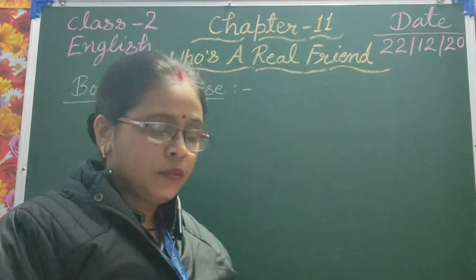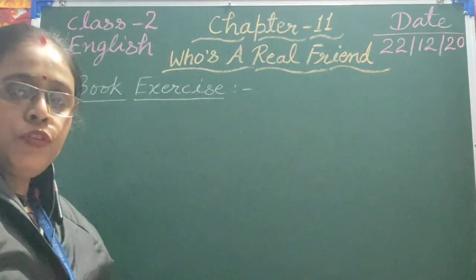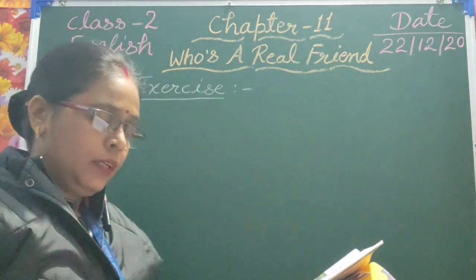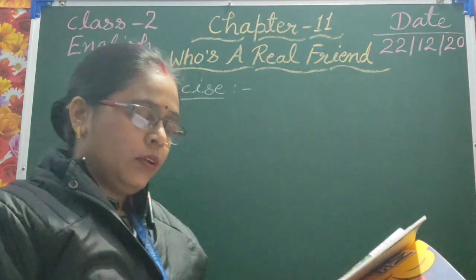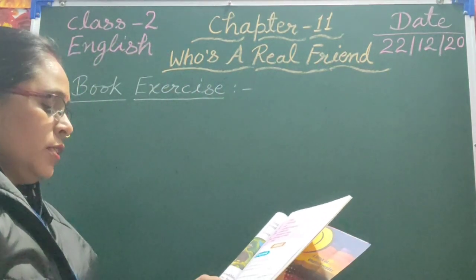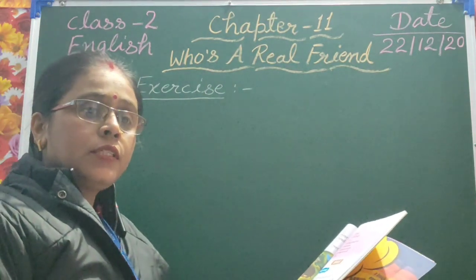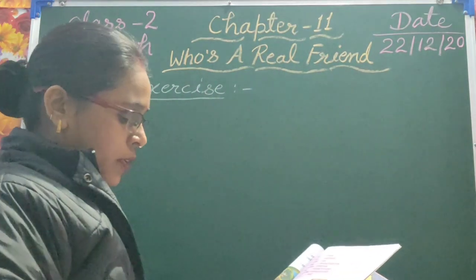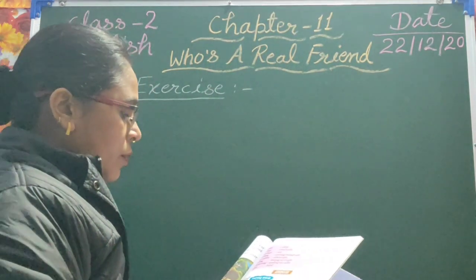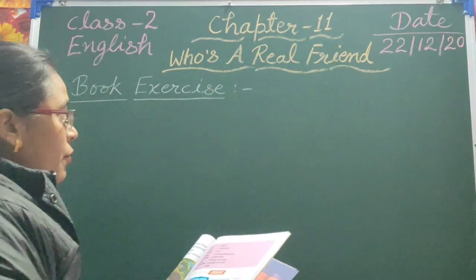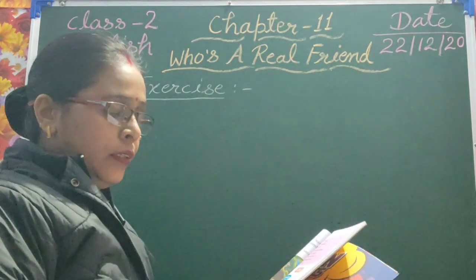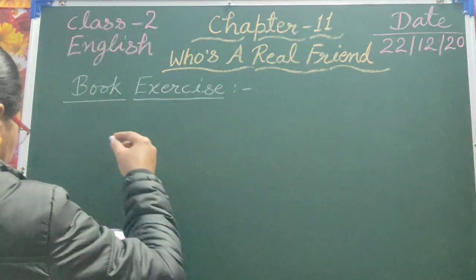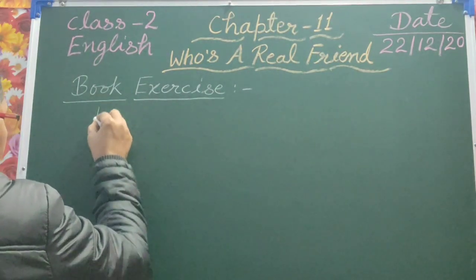Good morning students. All of you take out your Open Sky book, page number 89. First exercise of chapter 11 — its name is 'Who's a Real Friend.' Students, on page number 89, the first exercise of this chapter is given, so all of you complete this exercise with me.